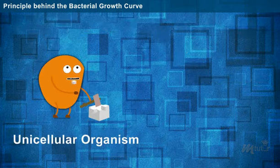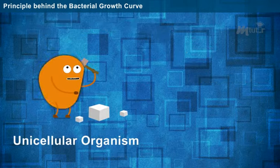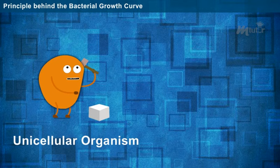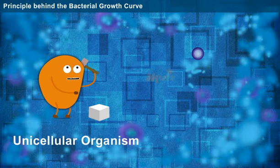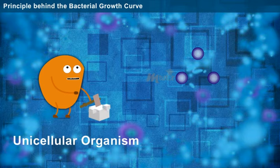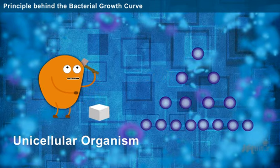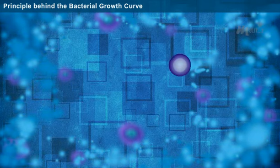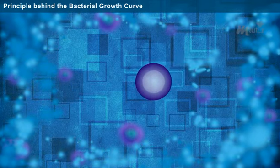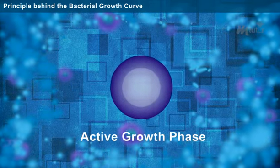The bacteria acquire energy from the nutrients to undergo binary fission by which one cell divides into two, two divides into four and so on in a corresponding pattern. The bacterium involved in binary fission is regarded to be in the active growth phase.